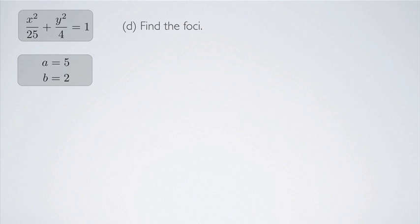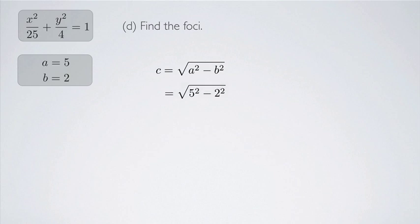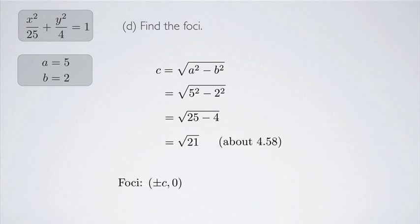Now let's find the foci. We first calculate c, given by c = √(a² − b²), which is always the formula as long as a is the larger value. In this case c = √(5² − 2²) = √(25 − 4) = √21, which is about 4.58.